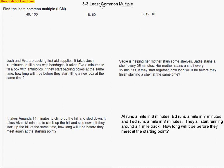They need to be common, meaning the same. So we're going to factor these numbers and break them down to smaller numbers that multiply to make 40. I look for a common factor — I see 10 goes into both numbers. So 10 times 10 makes 100, and 10 times 4 makes 40.